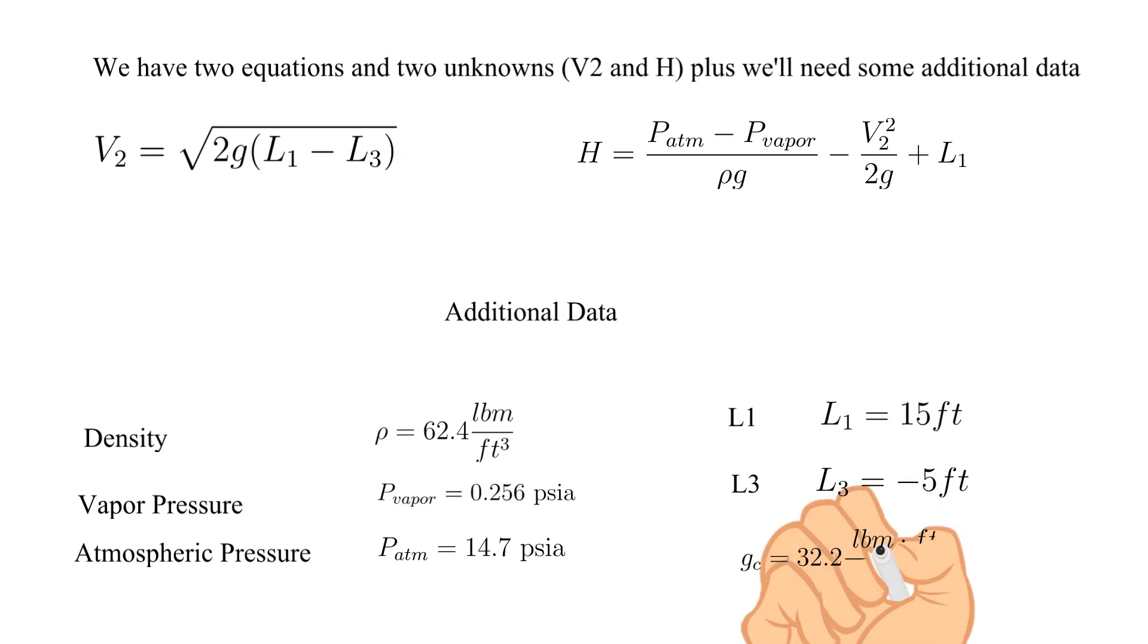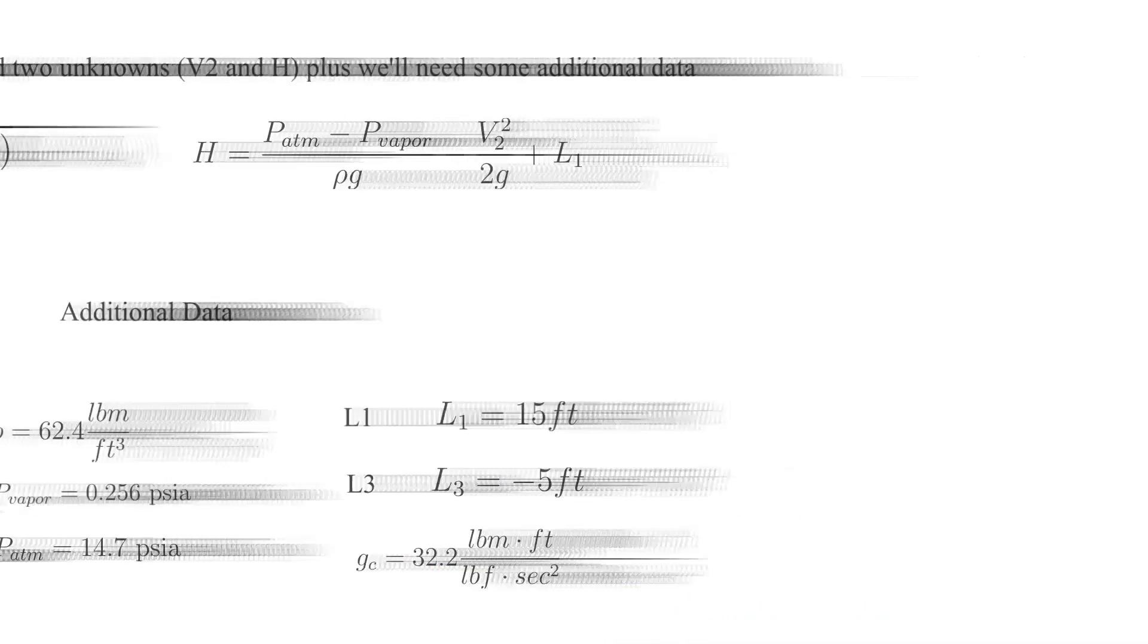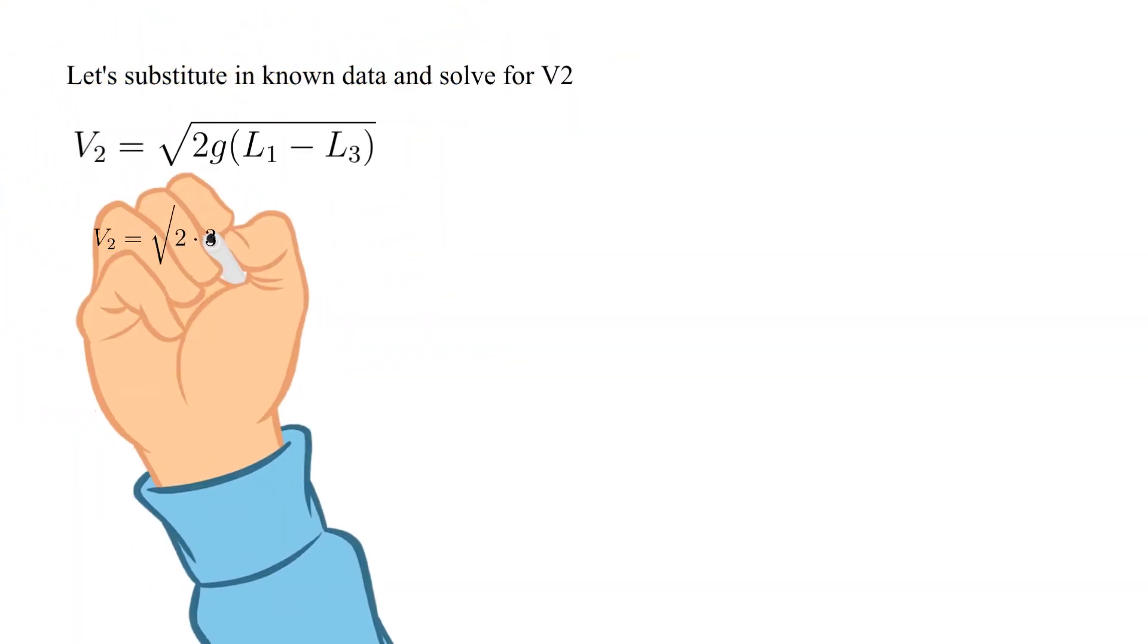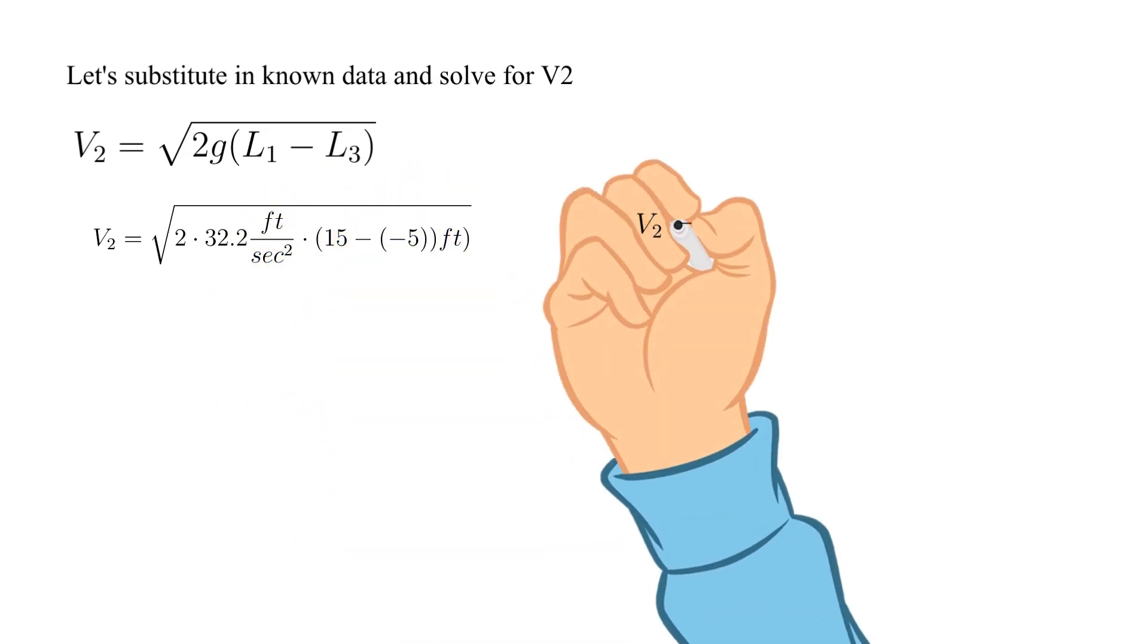L1 equals 15 feet. L3 equals minus 5 feet. The gravitational constant is equal to 32.2 pound mass foot per pound force seconds squared.